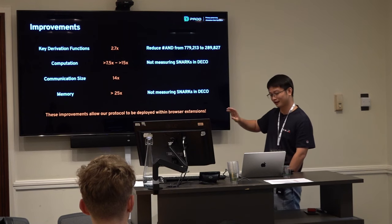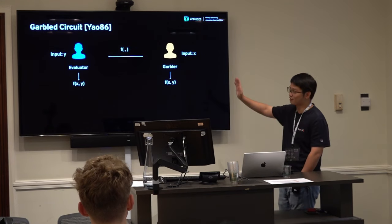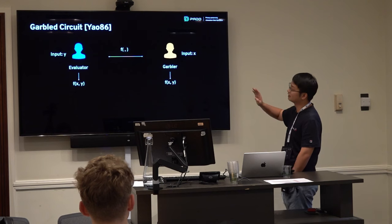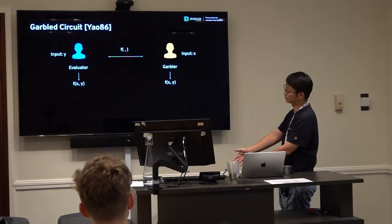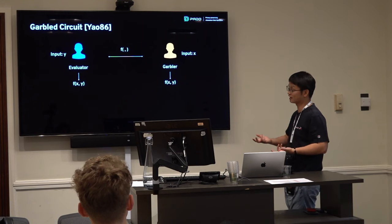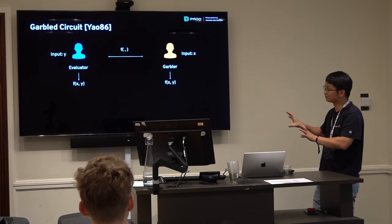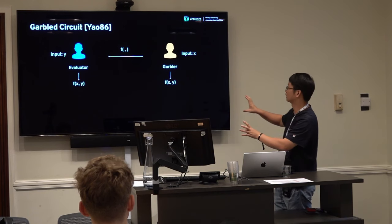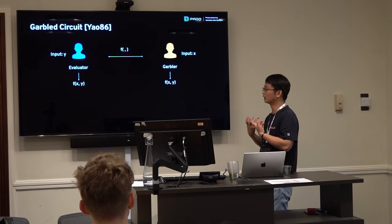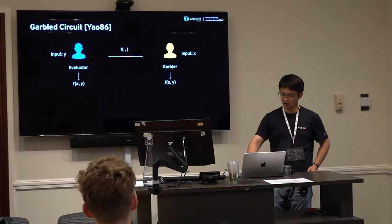Let me explain garbled circuits. The motivation: there are two parties, a garbler and an evaluator, each with private inputs, wanting to collaboratively compute a function f(x, y). This is the standard two-party computation problem. In our example, the garbler has two input bits and the evaluator has two input bits, and they want to compute a circuit with two AND gates and one XOR gate.